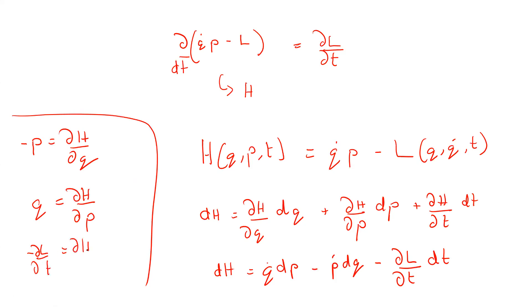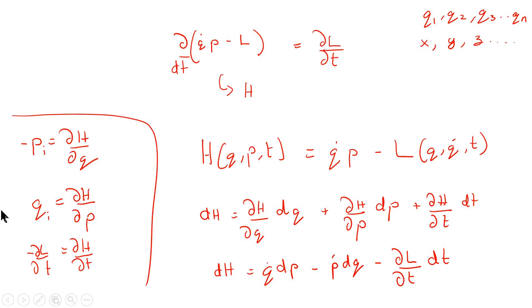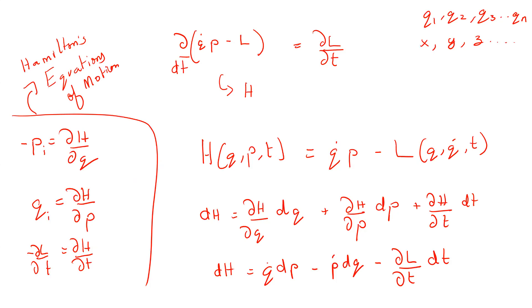I will box out Hamilton's equations of motion. These are called Hamilton's equations of motion and we will see how to use them. Here Q is the generalized coordinate, which can run from Q1, Q2, Q3 up to Qn — for example, Q1 can be X, Q2 can be Y, Q3 can be Z. For every generalized coordinate, we write out an equation of motion. These are Hamilton's equations of motion.